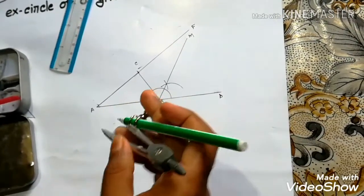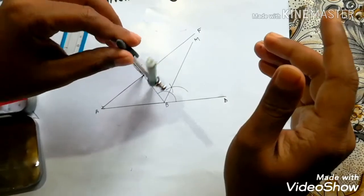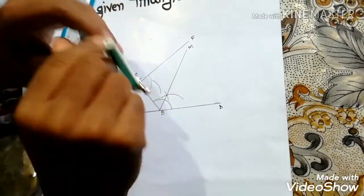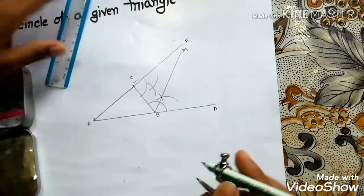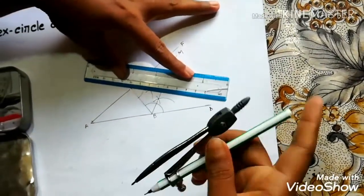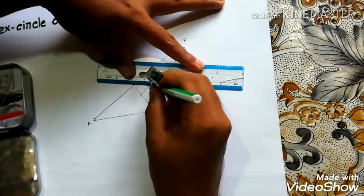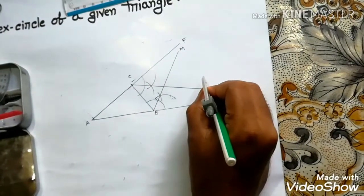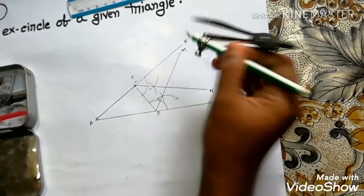Now we bisect BCF. And CN is the bisector of angle BCF.